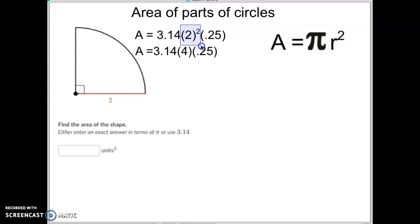So we will do that. 2 squared, or 2 times itself, is 4. And then we just multiply 3.14 times 4 times 0.25 equals 3.14. So our answer is 3.14.